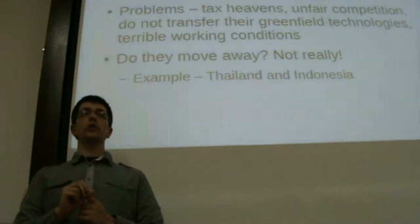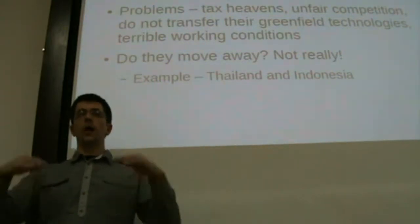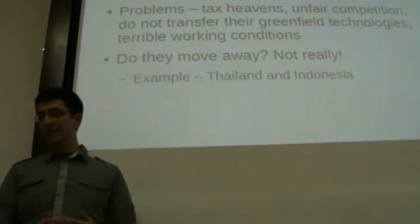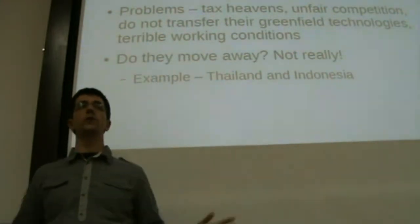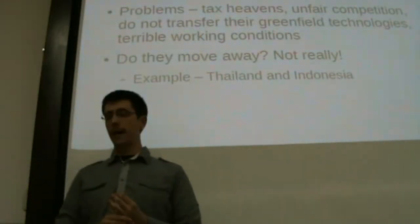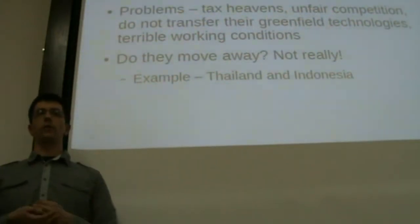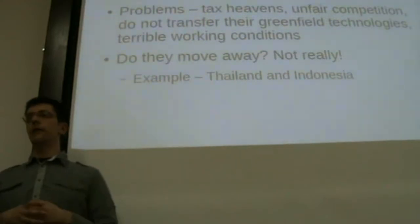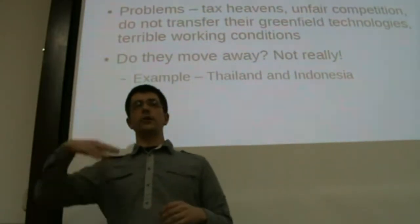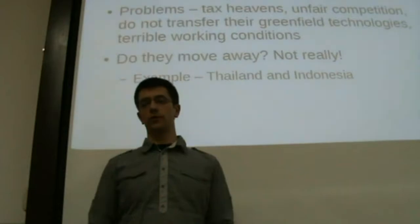Secondly, unfair competition — they can usually just drop their prices even though they lose for some time, causing local firms to go bankrupt, then raise their prices. It's unfair competition for local firms who cannot compete with really powerful transnational corporations. Also, they do not transfer greenfield technology — they don't create new technologies in those countries, they only outsource some part of their technologies. And also there are terrible working conditions. For example, Foxconn, where people work around 16 hours a day in terrible conditions, don't have health insurance, and they even have suicide nets — when workers jump from windows, nets catch them so they can be returned to work.